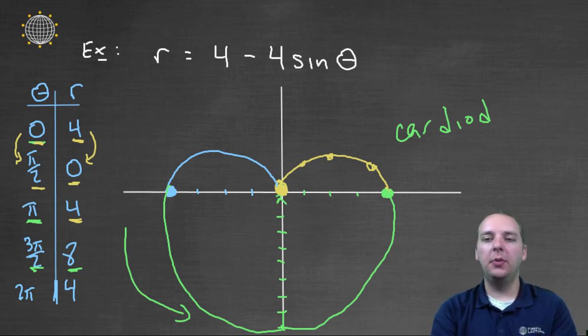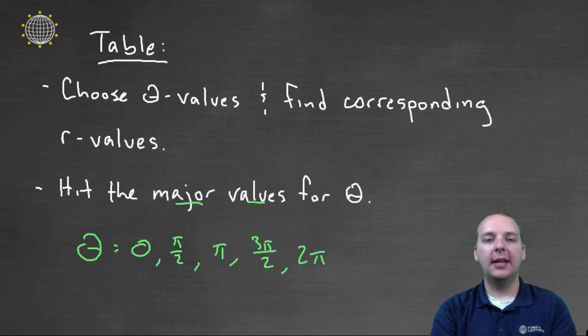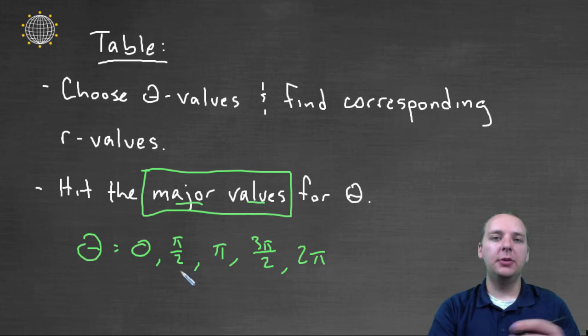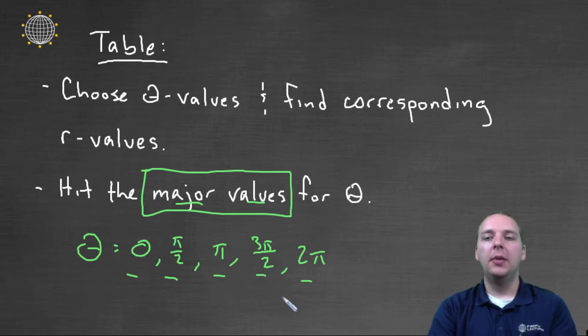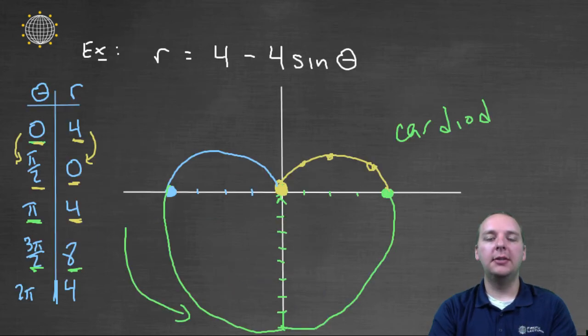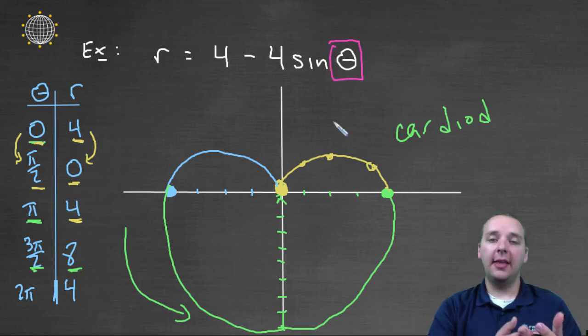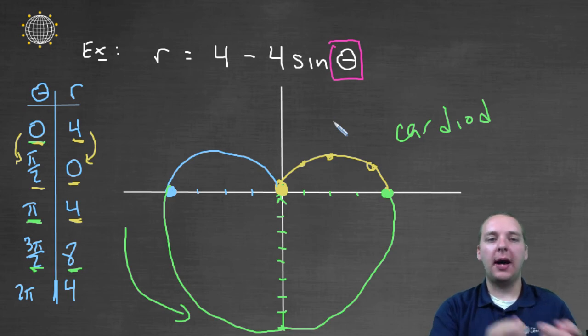All right, now before I let you go, I want to mention one last thing, and it's got something to do with these major values I spoke about. See the tendency once you do an example or two is you think that you always pick zero, pi over two, pi, three pi over two, and two pi. But here's something you have to consider. The only reasons we pick these as our thetas was because we had sine of just a theta. So that if we had a theta, then when you plug in zero, pi over two, pi, et cetera, you would be taking sine of the major angles.